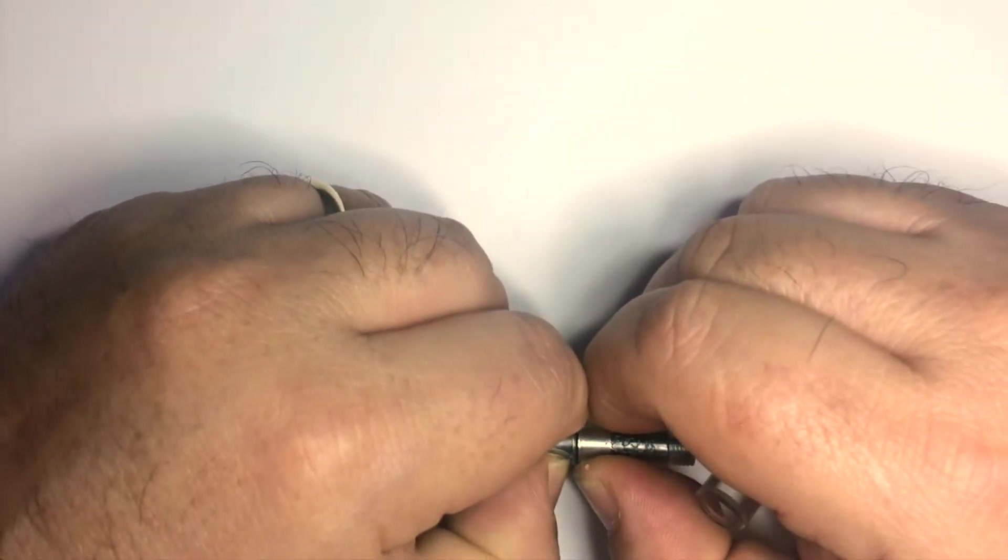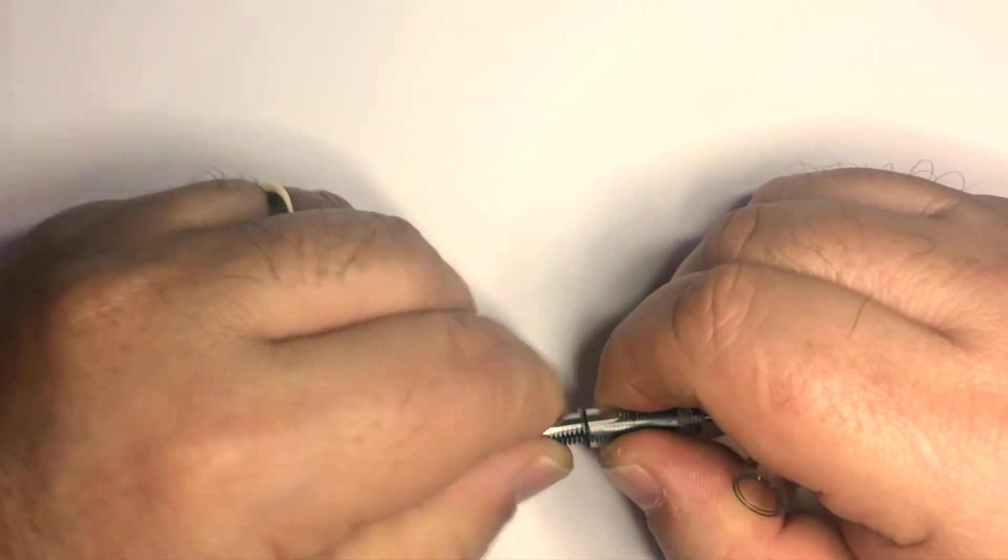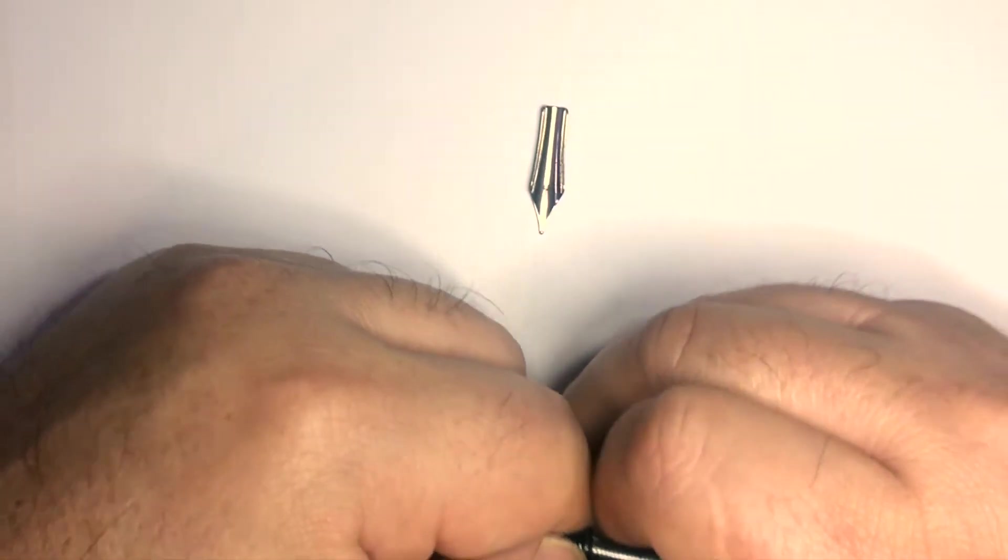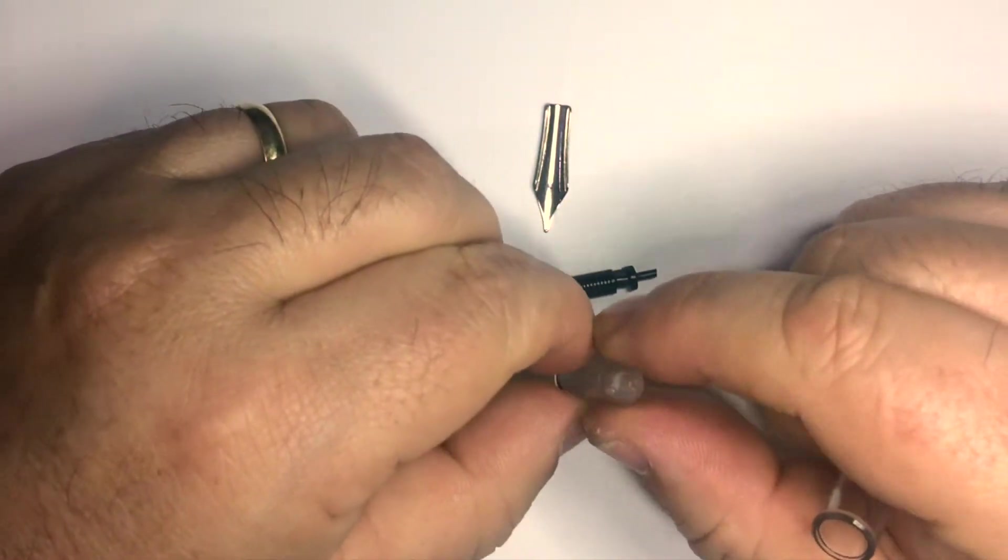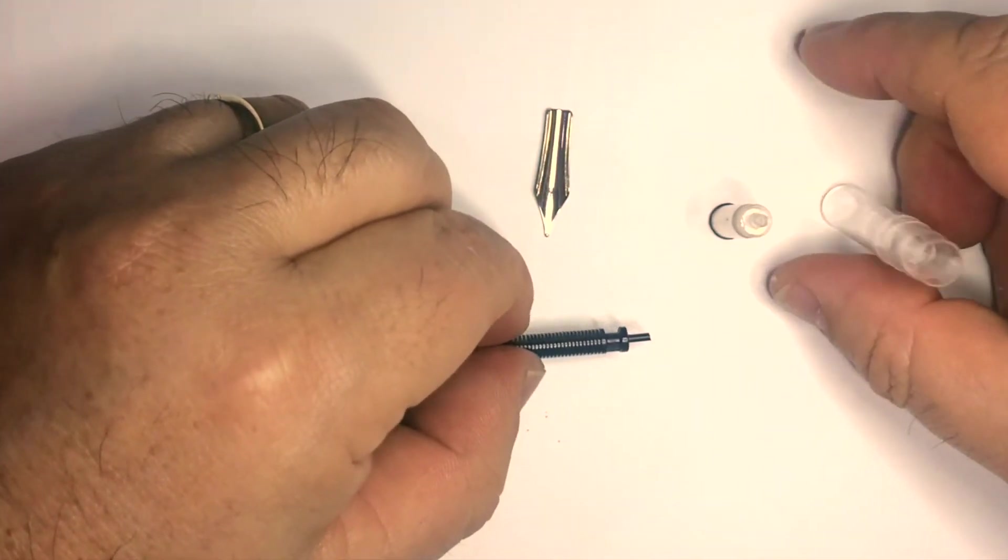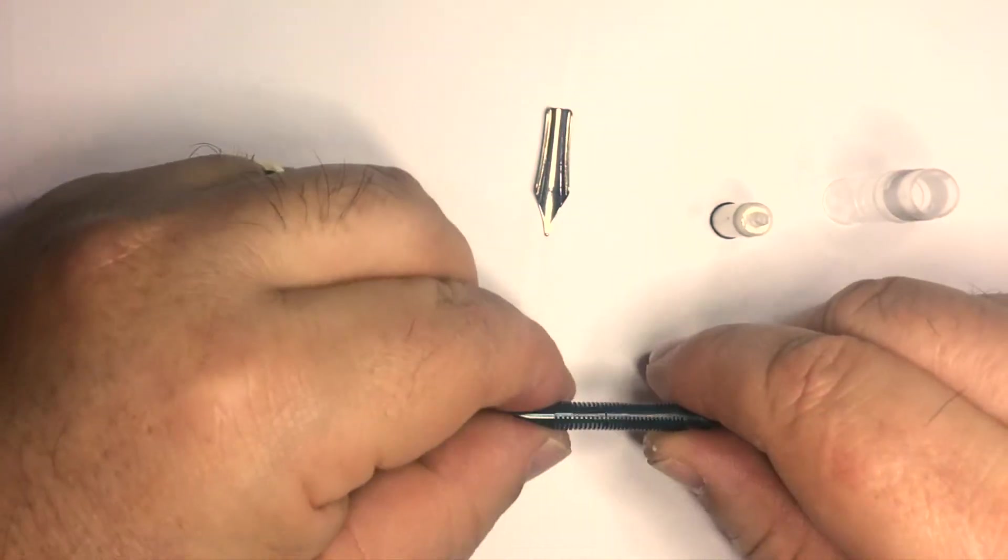And then you can see there's a little black o-ring that seals the unit against this chamfer on the section, so that you could eyedropper this. I would still put silicone in if I were to do it, and then you can slide this apart, and then I can slide this feed out of the nib unit. And here we have it.